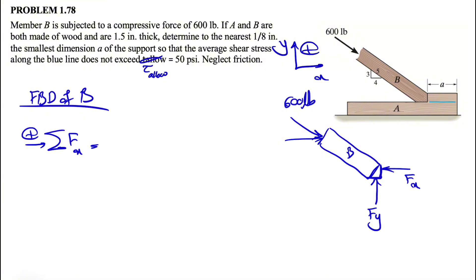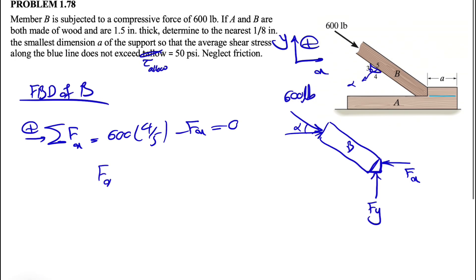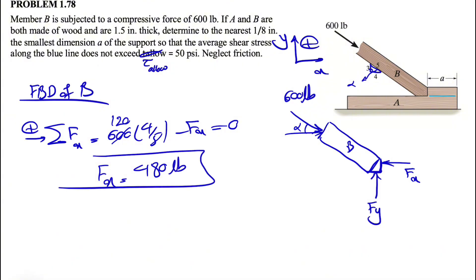We start with the sum of all forces in the X direction. We have the X component of the 600 pounds. From the given dimensions we have a right triangle, and the cosine of angle alpha is 4 over 5. So we have 600 times 4/5 minus FX equals 0, which gives us FX equal to 480 pounds.